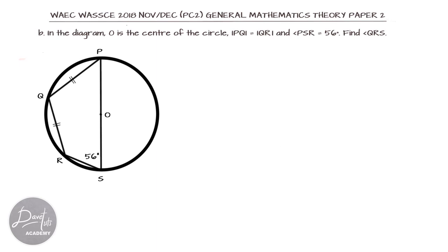Question number 5B. In this diagram, we are given that O is the center of the circle, PQ and QR are equal in length, and angle PSR is 56 degrees. We are to find angle QRS. Now, locating QRS on the diagram, that is being shaded in red, that is angle QRS that we are told to find.